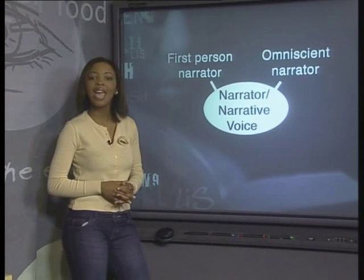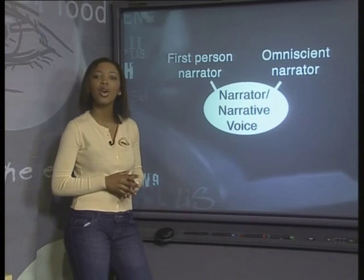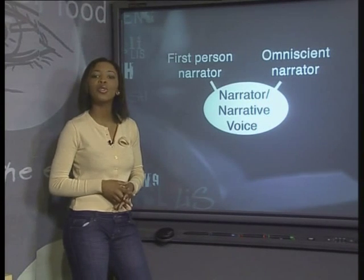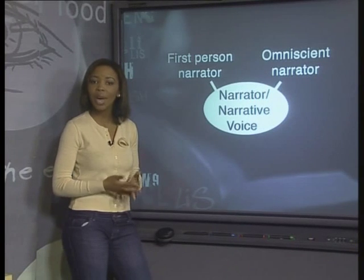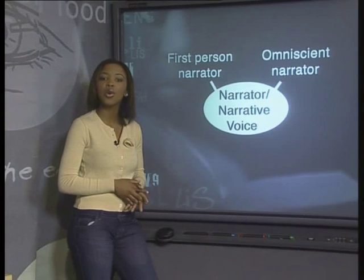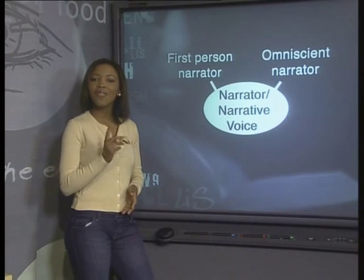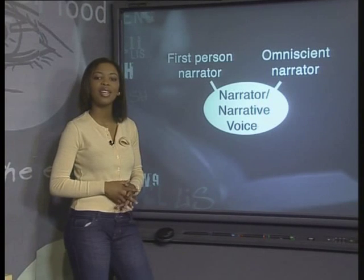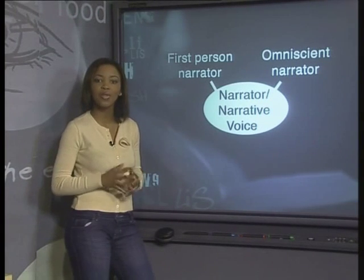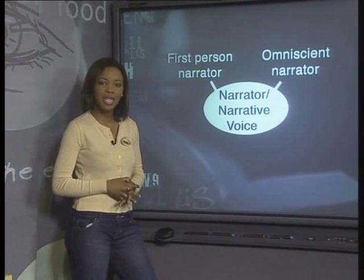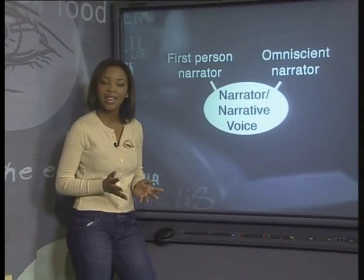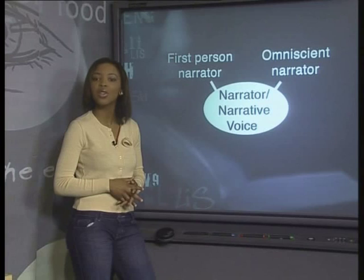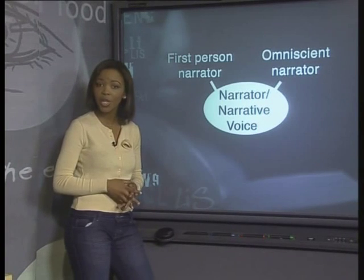The first person narrator is a character in the story who tells the story from his or her own point of view. The narrator will use first person pronouns like I, me, my, and mine, because the first person narrator will be describing events that he or she was either involved in or saw happening. The value of this technique is that the narrator tells the reader everything as if it were happening right in front of him or her. As readers, this can make us feel like we were also part of the action, or that we at least heard about it from someone who was there. Obviously, the first person narrator will not know anything that he or she does not experience personally.